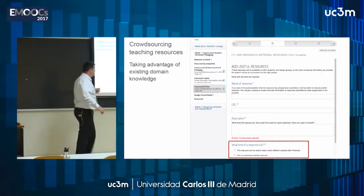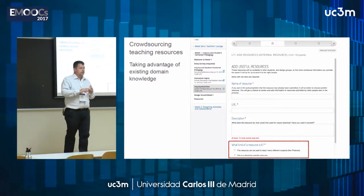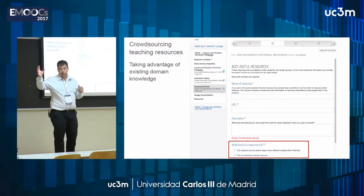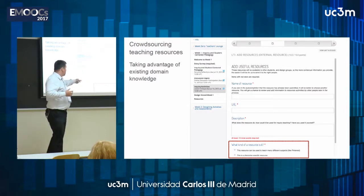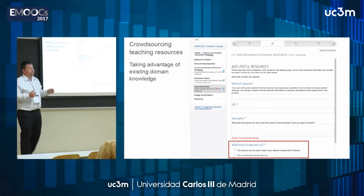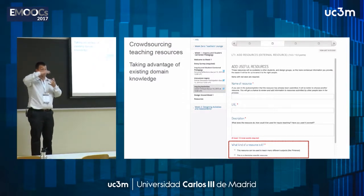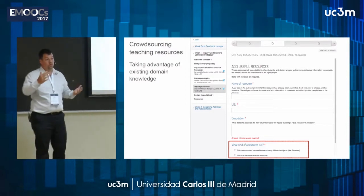Then we ask: what kind of resource is this? Is it discipline-specific, like a physics simulation not so interesting to the arts teacher? Or something like Google Docs, which could be used across many different disciplines in different ways? By clicking, you determine whether this resource will be shown only to people in your group or to the whole MOOC population.